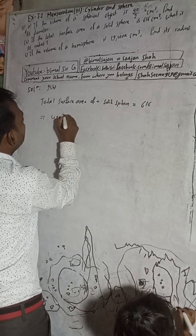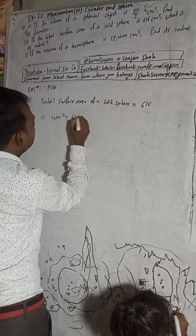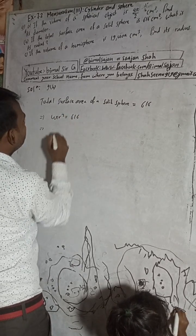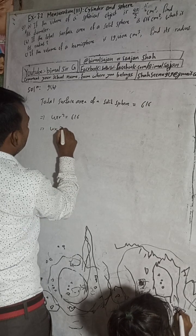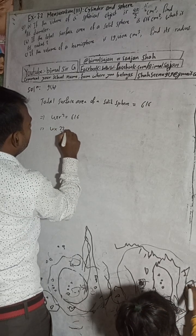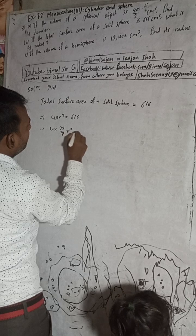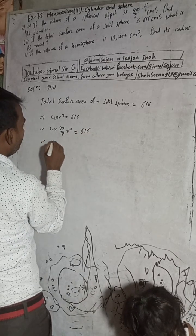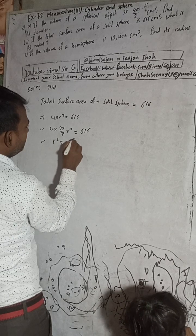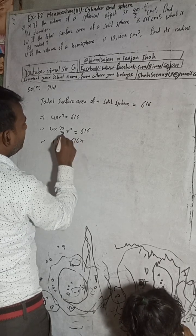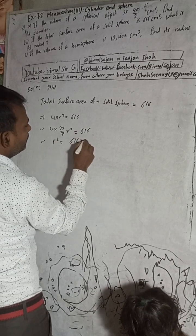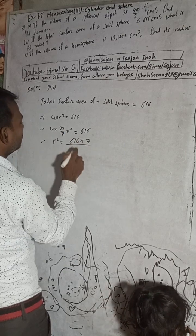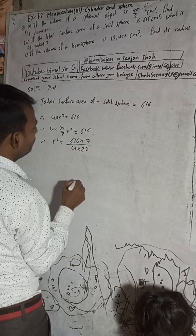Now you can write 4 × 22/7 × r² = 616. When we rearrange, r² = (616 × 7)/(4 × 22). Now when we cancel, 616 divided by 22... calculating step by step, 88 times 7...